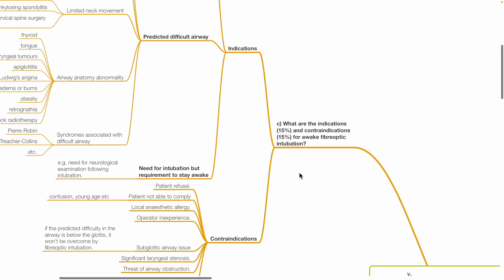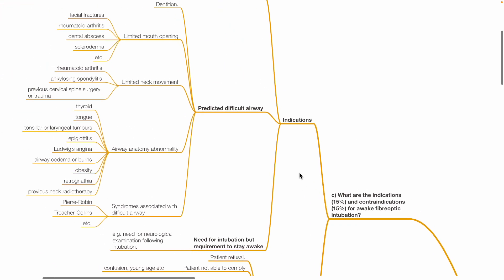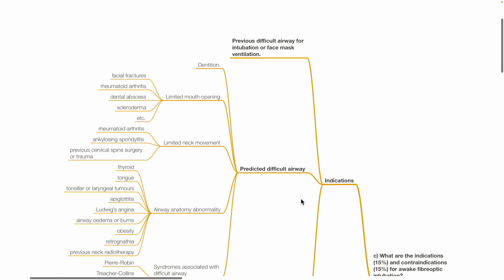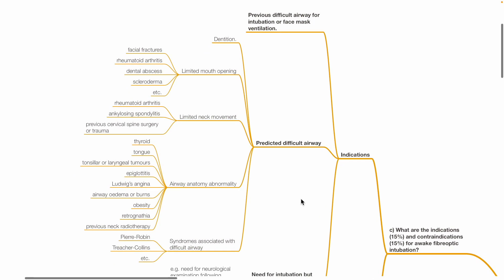C. What are the indications and contraindications for awake fibro-optic intubation? Indications include previous difficult airway for intubation or face mask ventilation, predicted difficult airway such as poor dentition, limited mouth opening which may be due to facial fractures, rheumatoid arthritis, dental abscesses, scleroderma etc. Limited neck movement which may be due to rheumatoid arthritis, ankylosing spondylitis, previous cervical spine surgery or trauma.